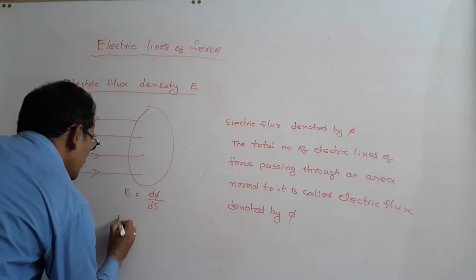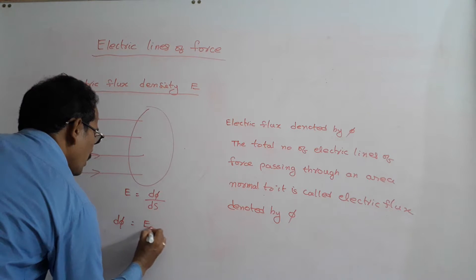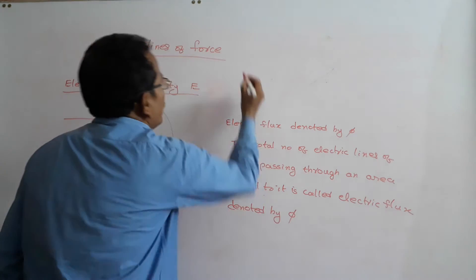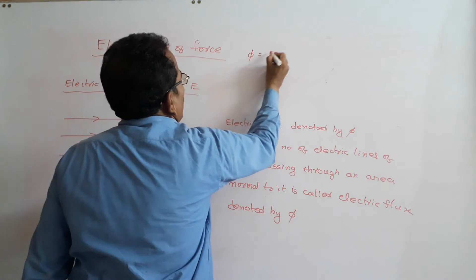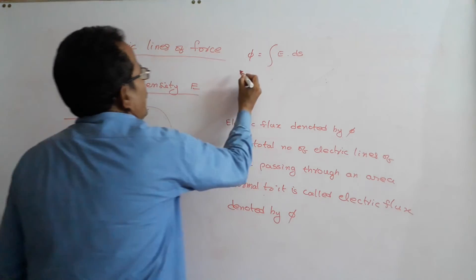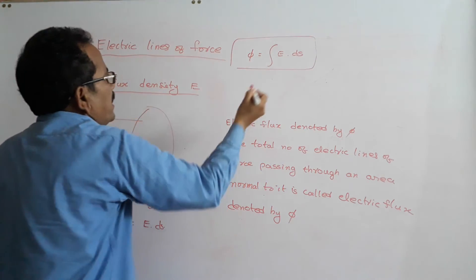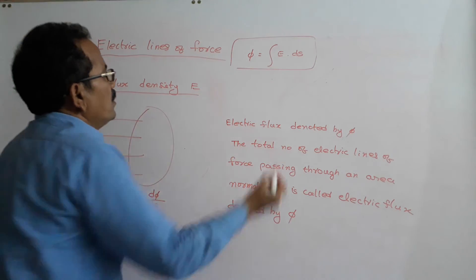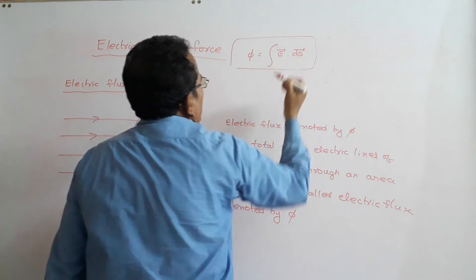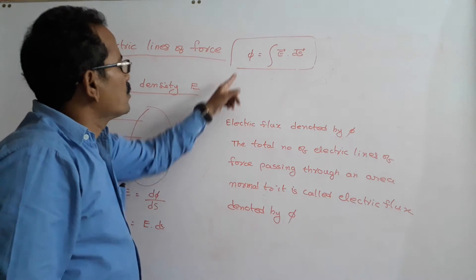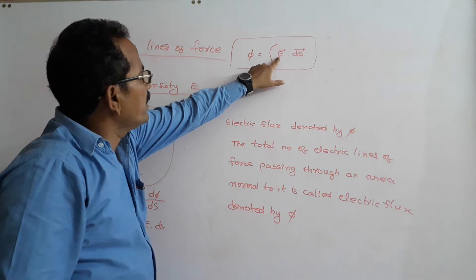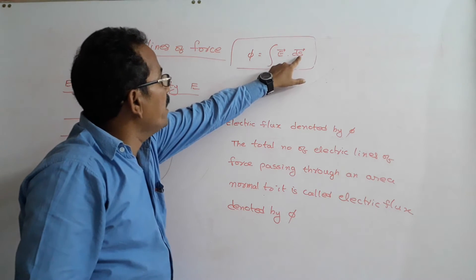So dφ equals E dot ds. What is the total flux phi? Phi is equal to the integral of E dot ds — that is the total electric flux. Here E-bar is a vector and ds-bar is also a vector. So electric flux is the dot product of the electric field intensity vector and the area vector.